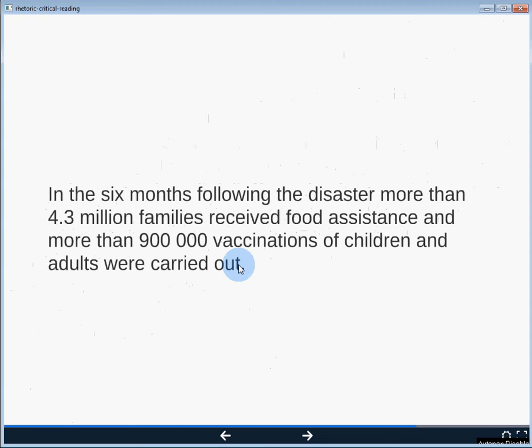'In the six months following disaster, more than 4.3 million families received food assistance, and more than 900,000 vaccinations of children and adults were carried out.' For me this is mostly a logos-based appeal — we have statistics being used to provide evidence. There's not a lot of inflated language to appeal to our emotions, so I wouldn't say it's pathos-based, and we don't even know who the speaker is, so the authority of the speaker isn't really in question. I would say this is almost exclusively based in logos.